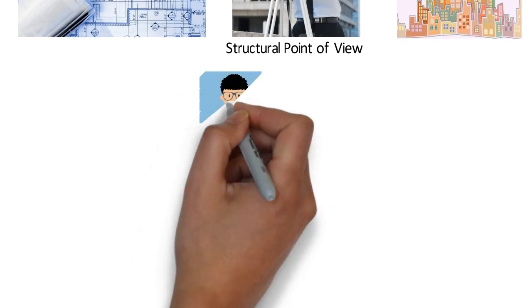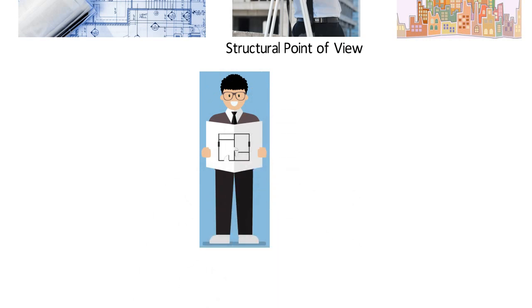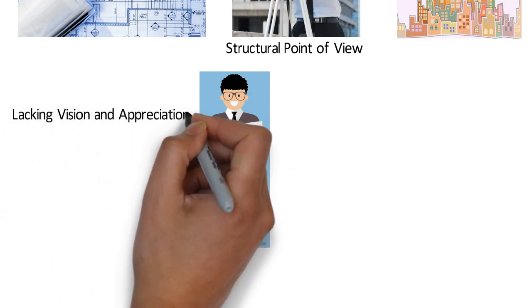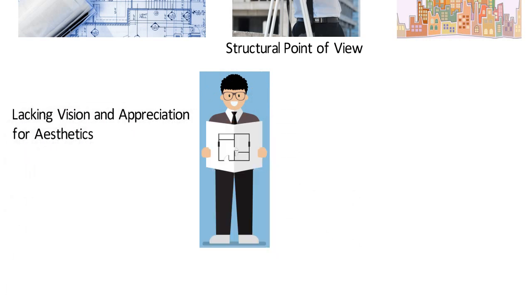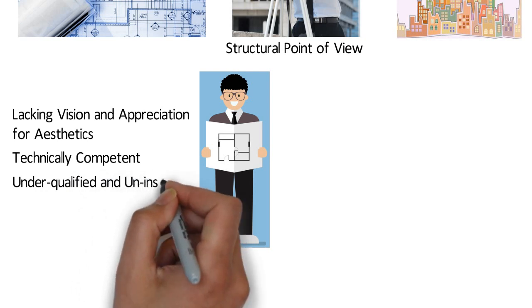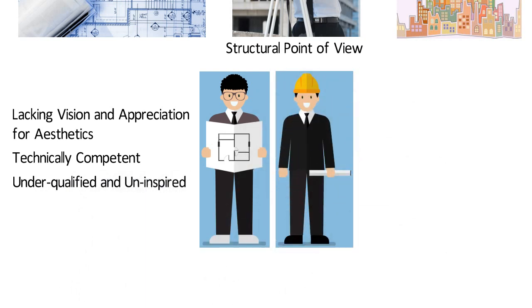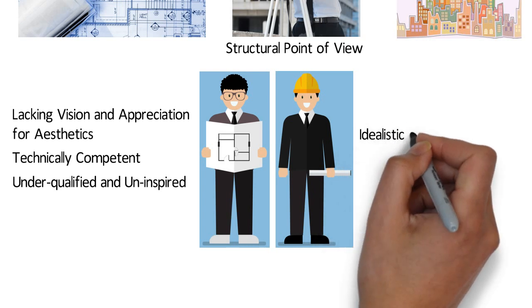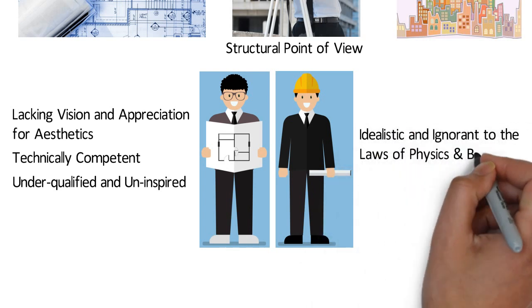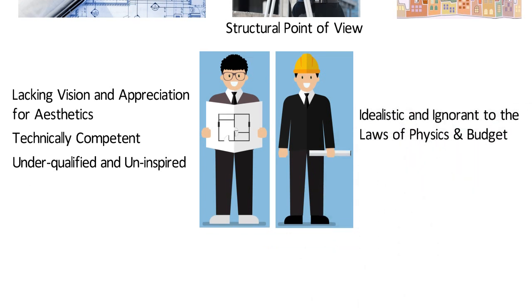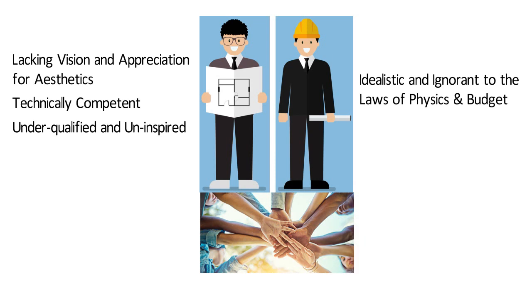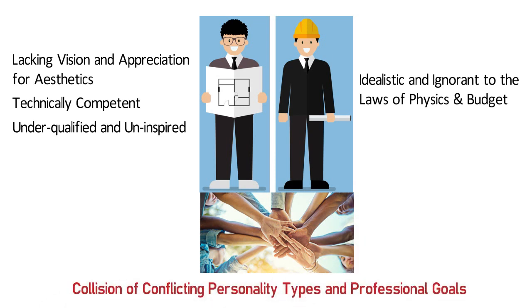Generally, architects view structural engineers as lacking vision and appreciation for aesthetics. They consider them as technically competent but otherwise underqualified and uninspired. While structural engineers typically view architects as idealistic and ignorant to the laws of physics and budget. Working together can be a collision of conflicting personality types and professional goals.